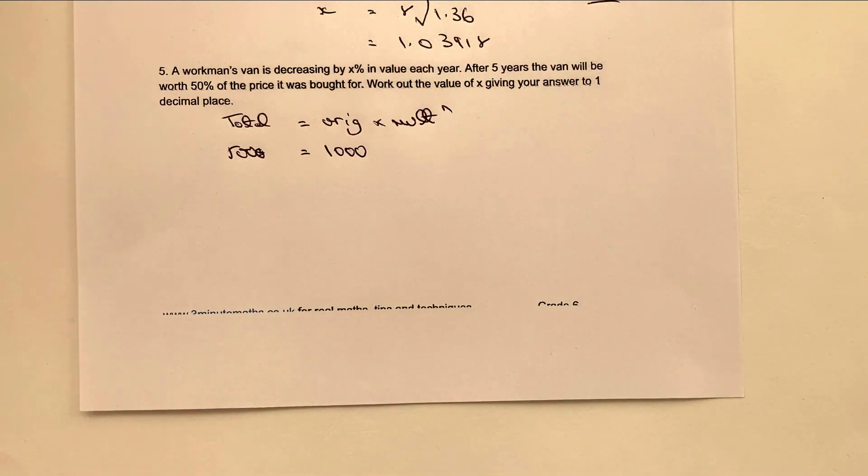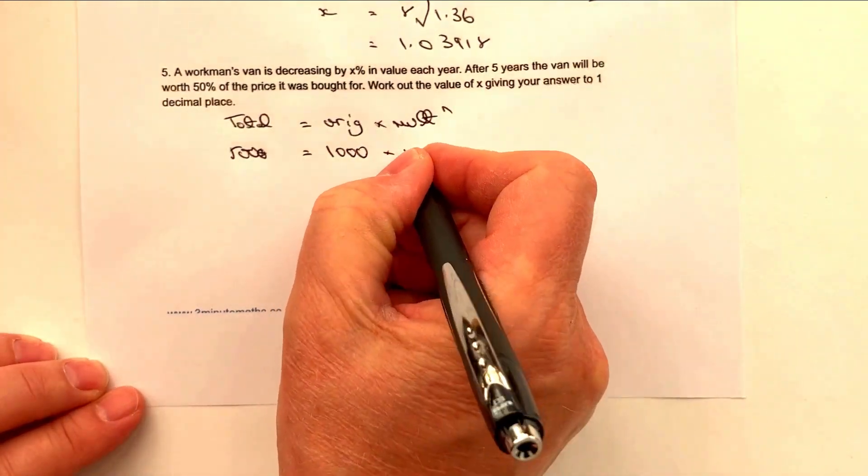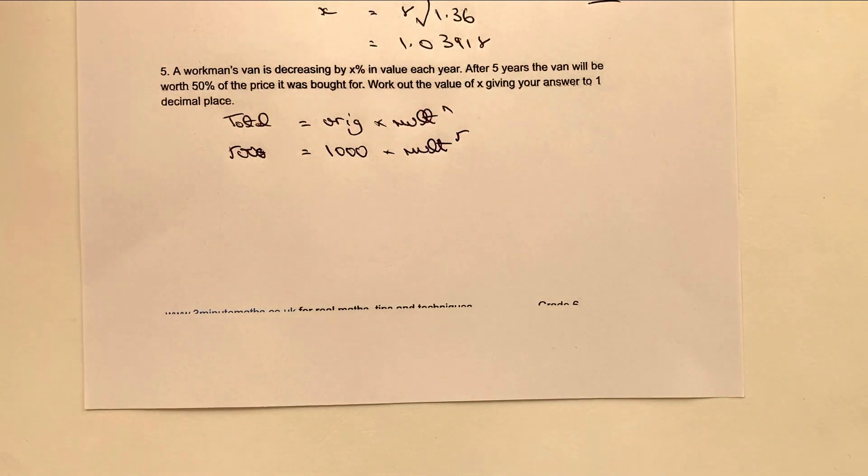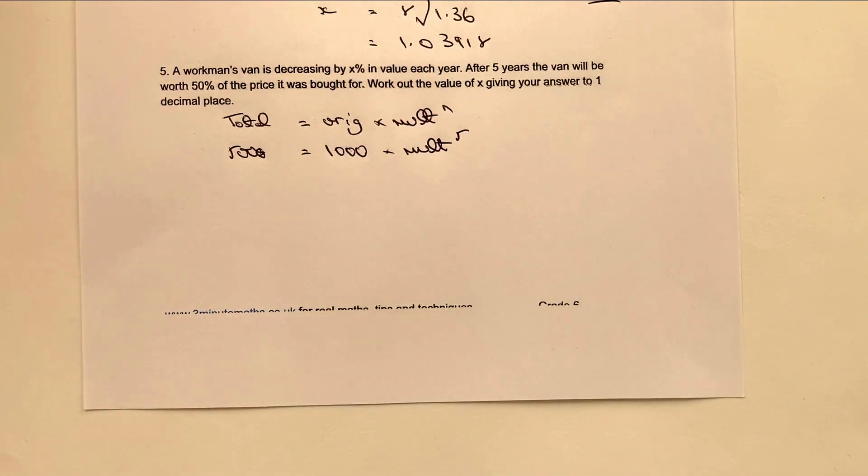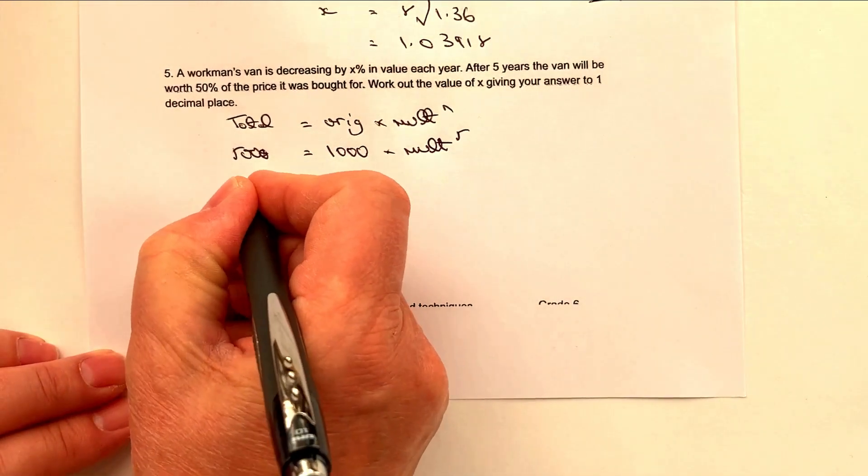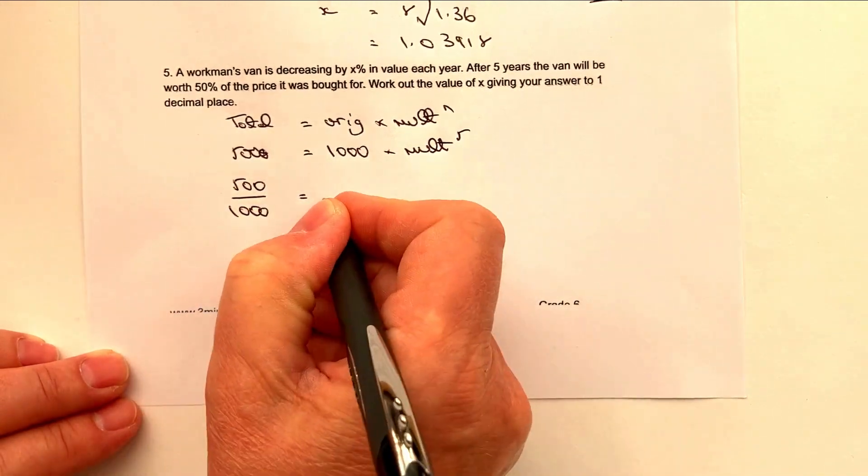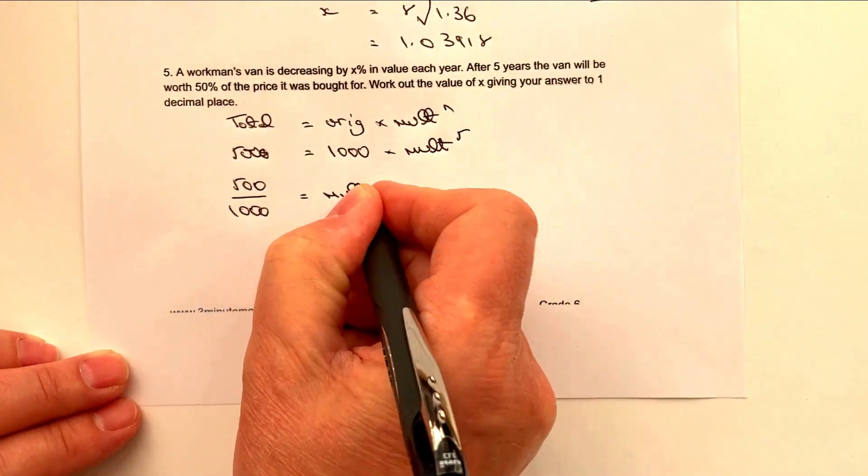So this particular workman, I'm sure vans are a lot more expensive than 1000 pounds, but this is just for the sake of argument - he bought it for 1000 pounds and after five years it was worth 500. So therefore, we've got a multiplier, which is what we're trying to work out, to the value of five. And then as we've done before, it's really just a case of isolating the value of the multiplier. So I'm going to divide both sides through by 1000. 500 divided by 1000 equals the multiplier to the fifth root.